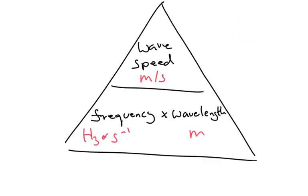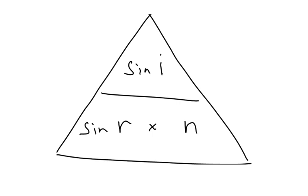Another classic IGCSE equation. The wave speed in meters per second is equal to the frequency multiplied by the wavelength. Now, frequency, it's either going to be in hertz or per second. They are equivalent, and wavelength will be in meters. If it's really not in meters, just make sure you convert. If they gave you centimeters, divide by 100. If they gave you millimeters, divide by 1,000. The refractive index equation, if you're asked to find out the refractive index, it's the sine of the angle of incidence divided by the sine of the angle of refraction.